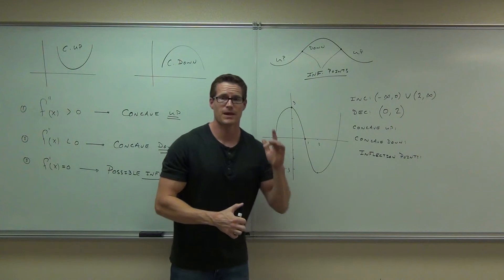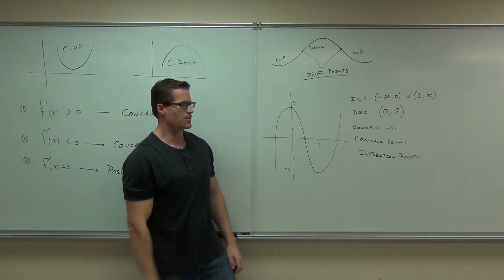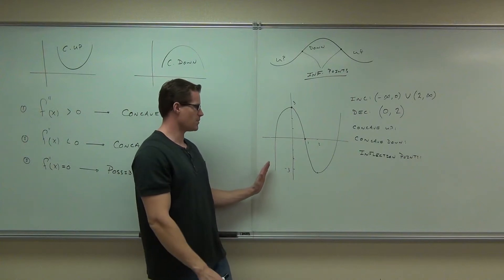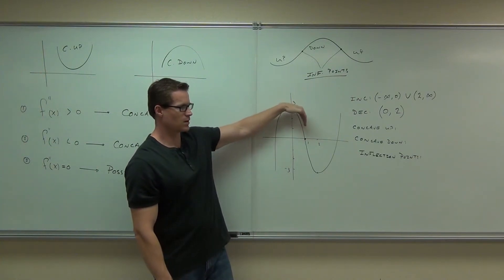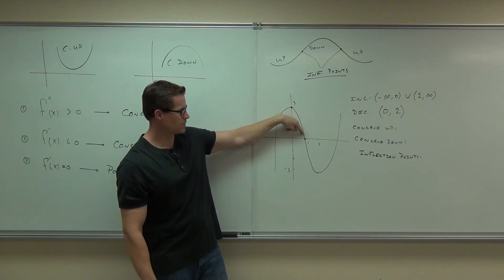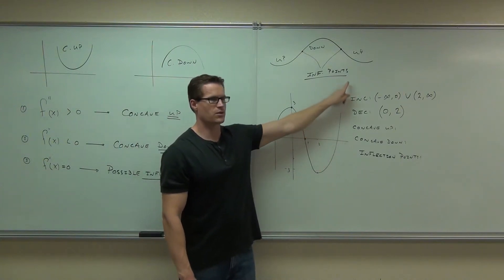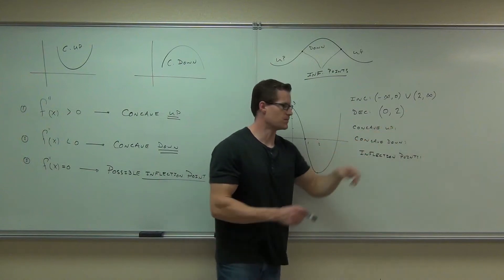Zero to two is decreasing. If you need more help on that, you come and see me. How about concave up? You need to be able to determine concave up versus concave down. Am I concave up here? Concave up? How about here? This is concave up? Concave up, forever. Concave up from one to infinity.